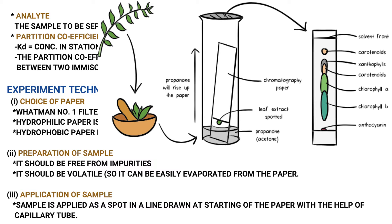The third point is application of sample. We use the paper and apply the sample onto it. The sample is applied as a spot on a line drawn at the start of the paper, with the help of a capillary tube.